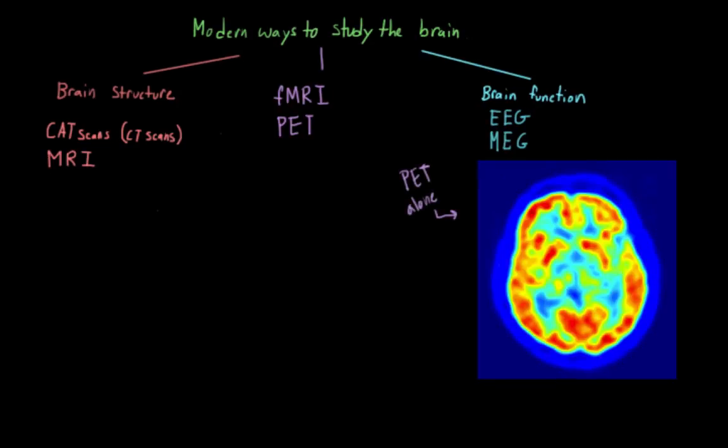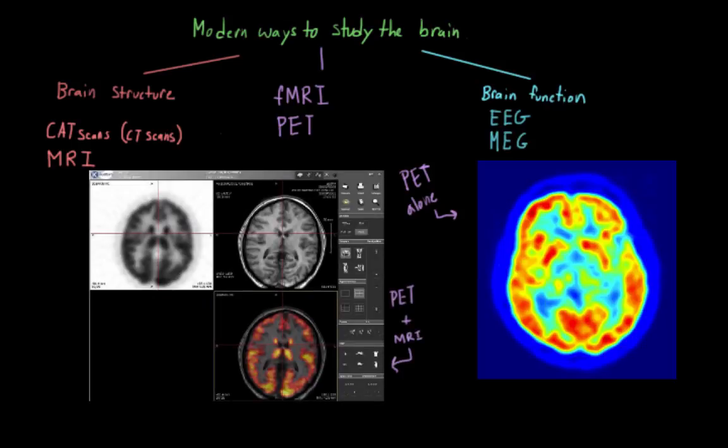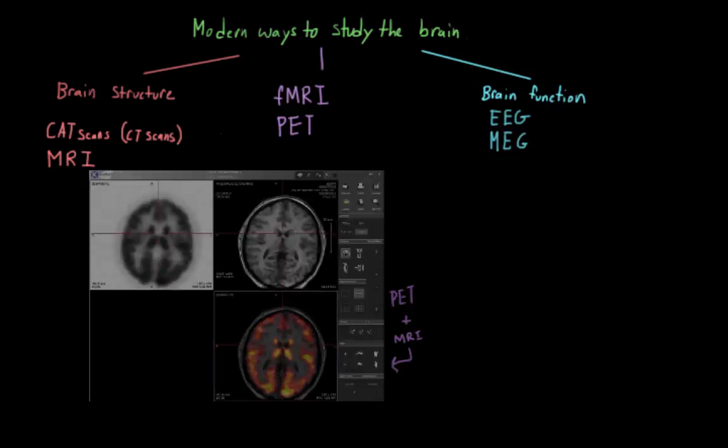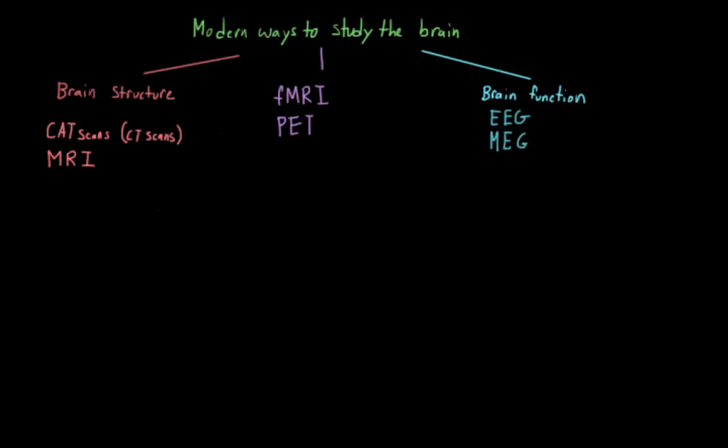To do this technique, a kind of radioactive glucose is injected into a person. Since active cells naturally use more glucose, because they're using up the most energy and need to replenish it, we can directly see what areas of the brain are more active at a given point in time. But even so, fMRI is a lot more popular, at least within the social sciences. This is probably because PET scans are a lot more invasive. You actually need to inject someone with a substance.